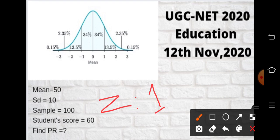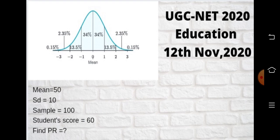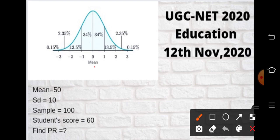Z equals 1 means this score of 60 falls one standard deviation, or one sigma, above the mean. The mean is 50, and one standard deviation above that is your score of 60.